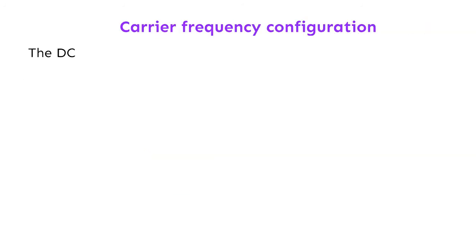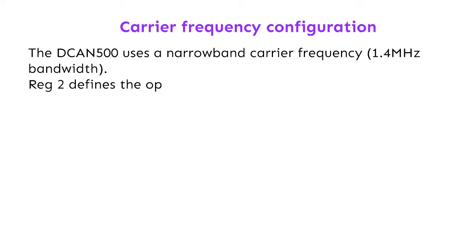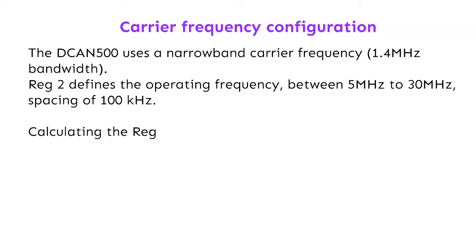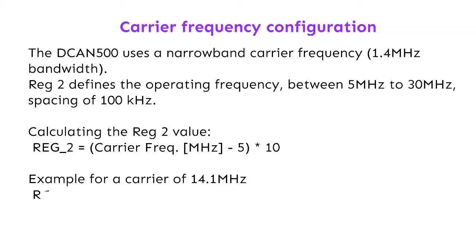Carrier frequency configuration: The DCAN 500 uses a narrowband carrier frequency. REG 2 defines the operating frequency between 5 to 30 MHz with a spacing of 100 kHz. To calculate the REG 2 value: REG 2 equals the carrier frequency in MHz minus 5, multiplied by 10. For example, for a carrier of 14.1 MHz, REG 2 equals (14.1 minus 5) multiplied by 10, which equals 0x5B hex.